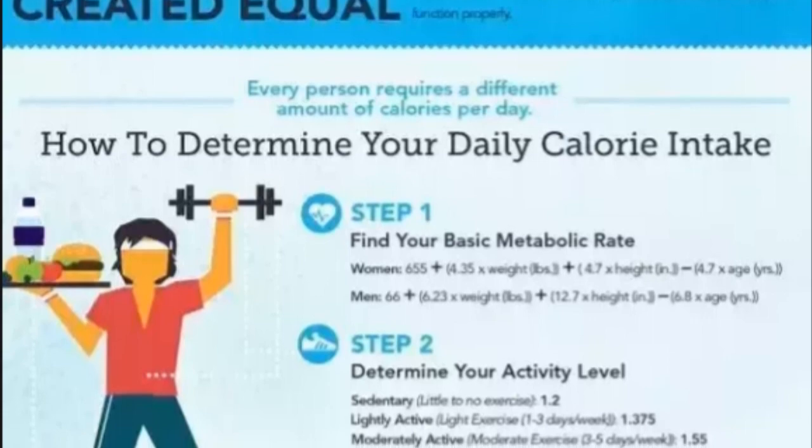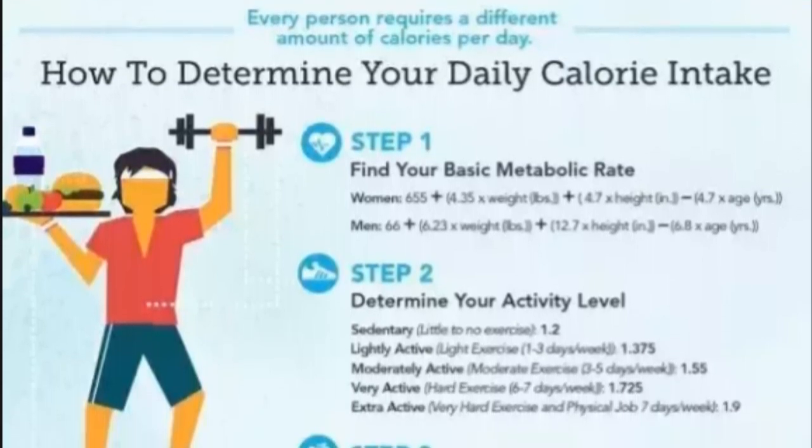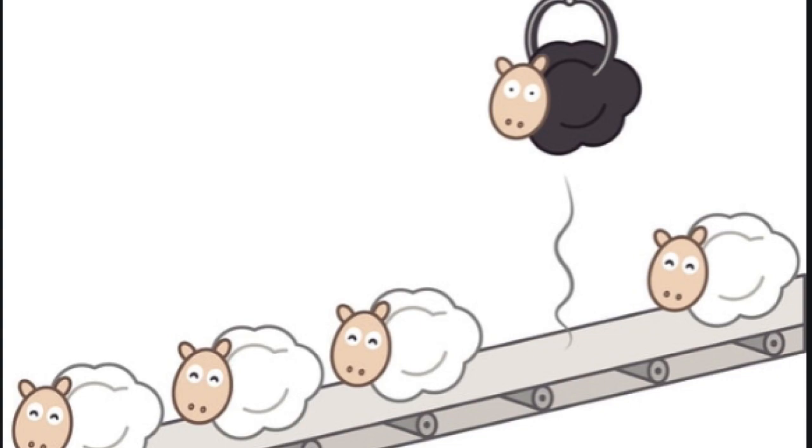First we will calculate basal metabolic rate — what calories are required for the body while at rest — and then multiply it with a multiplier to get our required lifestyle calories. BMR is calculated according to the Mifflin-St Jeor equation, but various other websites can also give you BMR. However, I find their multipliers faulty because I have used them with various clients and found they don't work well.